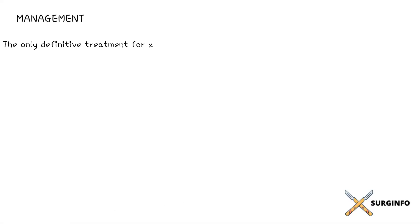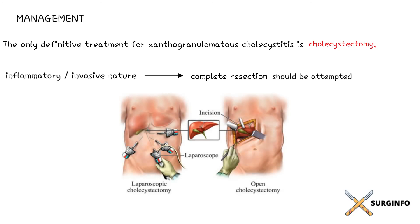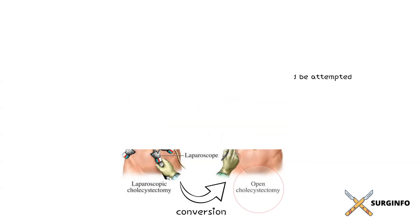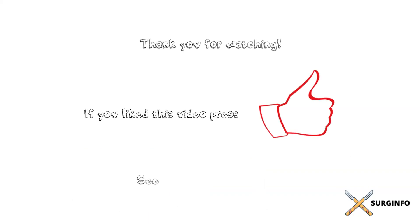The only definitive treatment for xanthogranulomatous cholecystitis is cholecystectomy. Due to the inflammatory and invasive nature of the disease, complete resection of the xanthogranulomatous tissue adjacent to the gallbladder should be attempted, even if this includes resection into the hepatic bed. Open cholecystectomy is usually required due to dense fibrosis and extensive local inflammation. Laparoscopic cholecystectomy may be attempted, but conversion to open surgery is often required. When the hepatocystic triangle has been obscured, subtotal cholecystectomy is an option to avoid major complications, as long as gallbladder cancer has been excluded by intraoperative frozen section.